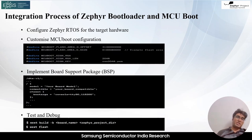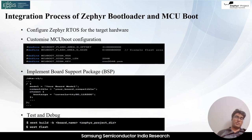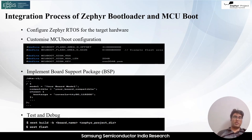The next step in the integration process is building the bootloader and the Zephyr application. Build the Zephyr bootloader using the Zephyr build system — this will compile the bootloader code and generate the bootloader image file. Also build the Zephyr application you want to boot using the bootloader, ensuring the application is built with the necessary MCU boot integration and configuration options. Then flash the compiled bootloader image and the Zephyr application image to the appropriate memory location, ensuring each is placed according to the slot layout defined by the bootloader.